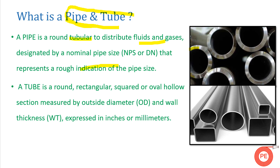Pipes are designated by either nominal pipe size or DN. This nominal pipe size and DN are a rough indication of pipe size. For example, if we need a DN 200 pipe, it doesn't mean the pipe size is exactly 200 mm. For a DN 200 pipe, the outside diameter is about 219.1 mm, and the inside diameter will vary with the change in schedule number.